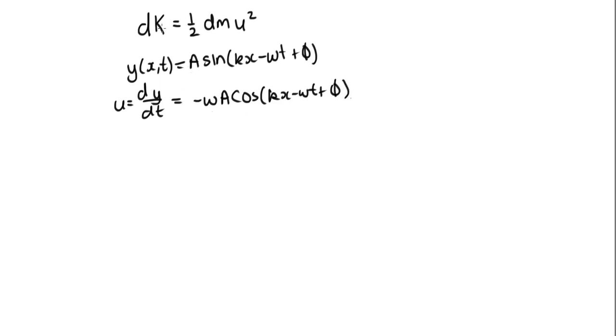For the kinetic energy in an increment of string, dK equals one-half dm u squared. The mass of a small piece of length dx is dm = μ dx, where μ is the linear density. So dK = (1/2) μ dx ω² A² cos²(kx - ωt + φ).